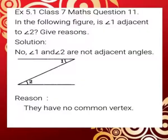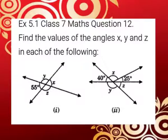Question number 11: In the following figure, is angle 1 adjacent to angle 2? Give reasons. Solution: We are given a figure and we have to say whether angle 1 and angle 2 are adjacent or not, with reasons. From the figure, it is clear that angle 1 and angle 2 are not adjacent angles. The reason is they do not have a common vertex.